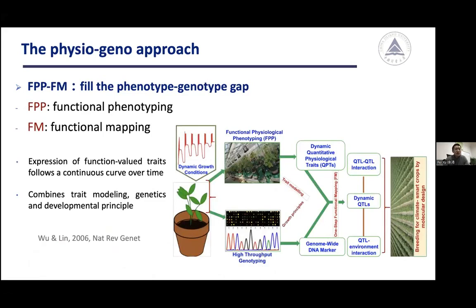Recently we proposed a joint framework called FPPFM to fill the phenotype-genotype gap. Here FPP refers to functional phenotyping and FM refers to functional mapping. Functional mapping was originally proposed by Wu and Lin, dating back to 2006. The basic idea is that expression of functional value traits follows a continuous curve over time. By combining trait modeling, genetics, and developmental principles, functional mapping can dissect dynamic traits in a more efficient and higher-resolution way.